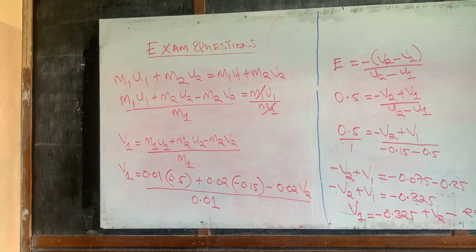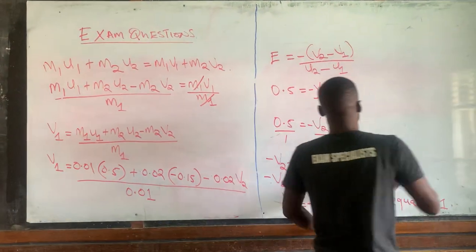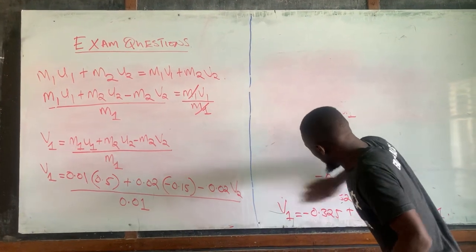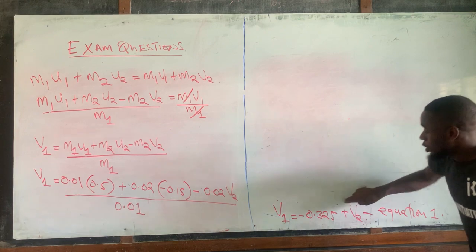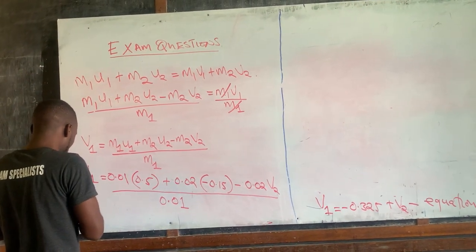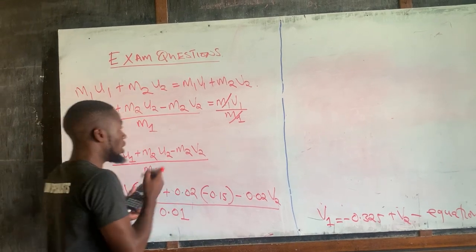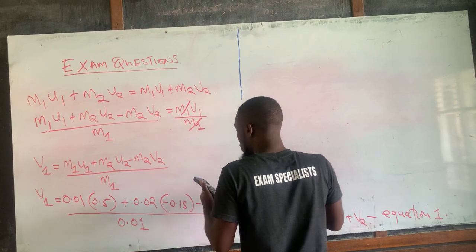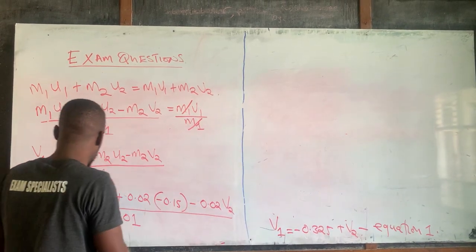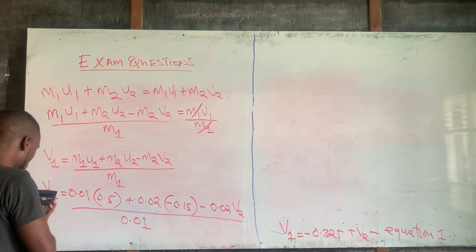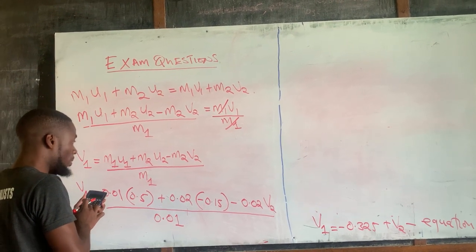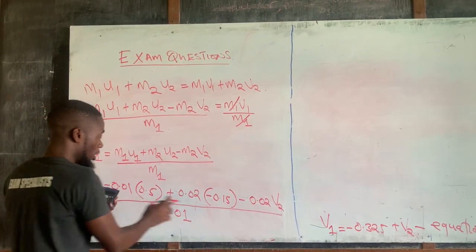Let's do the mathematics: 0.01 multiplied by 0.5 gives 0.005, and 0.02 multiplied by negative 0.15 gives negative 0.003. So the numerator becomes 0.005 minus 0.003 minus 0.02·v2.